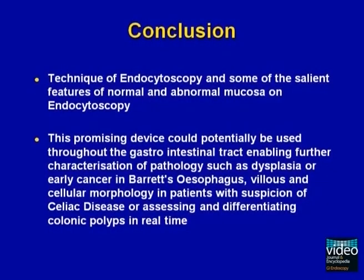In conclusion, we have demonstrated the technique of endocytoscopy and some of the salient features of normal and abnormal mucosa. This promising device could potentially be used throughout the gastrointestinal tract, enabling further characterization of pathology such as dysplasia or early cancer in Barrett's oesophagus, villous and cellular morphology in patients with suspicion of celiac disease, or assessing and differentiating colonic polyps in real time.